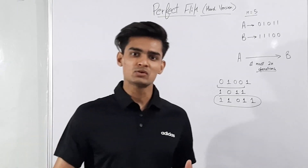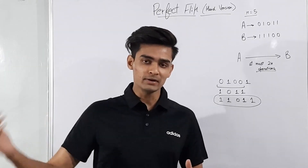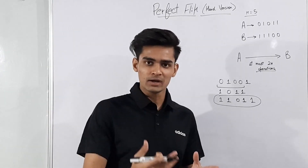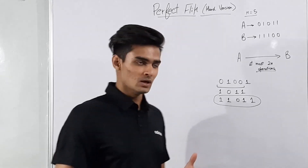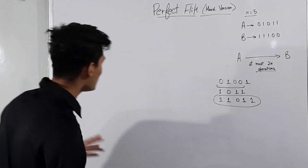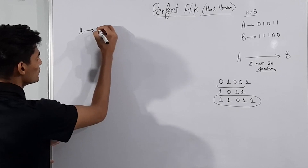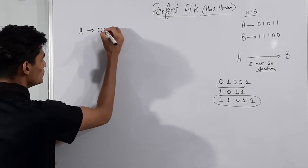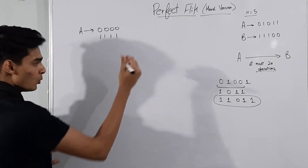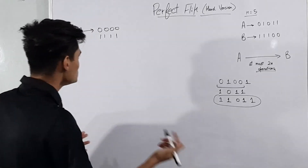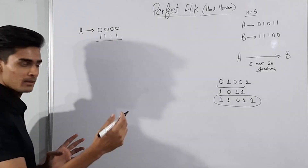Let's forget this question for a second. Instead of converting a directly to b, let's try to convert a to a string of all 0s or all 1s. The reason we use a string of all 0s or all 1s is that if we reverse such a string, it remains the same.